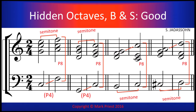Hidden octaves are also acceptable when both outer voices — bass and soprano — move upwardly, provided that one of the outer voices progresses by a semitone into the octave, either diatonic or chromatic. The other outer voice may skip or leap into that octave.